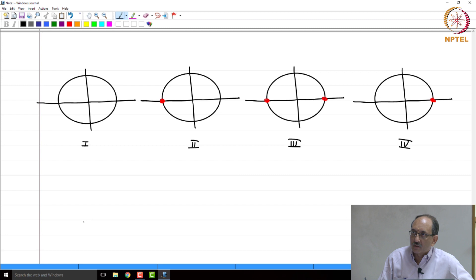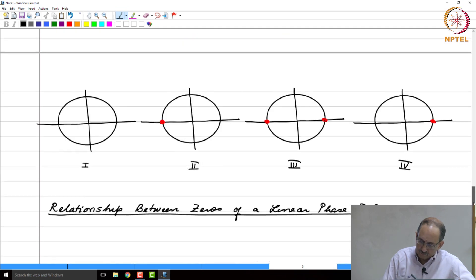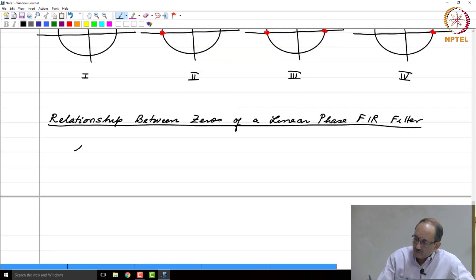There is another aspect to FIR filters in terms of relationship to zeros. So, the relationship between zeros of a linear phase FIR filter. Recall that H(n) has to be either plus or minus H(N-1-n).